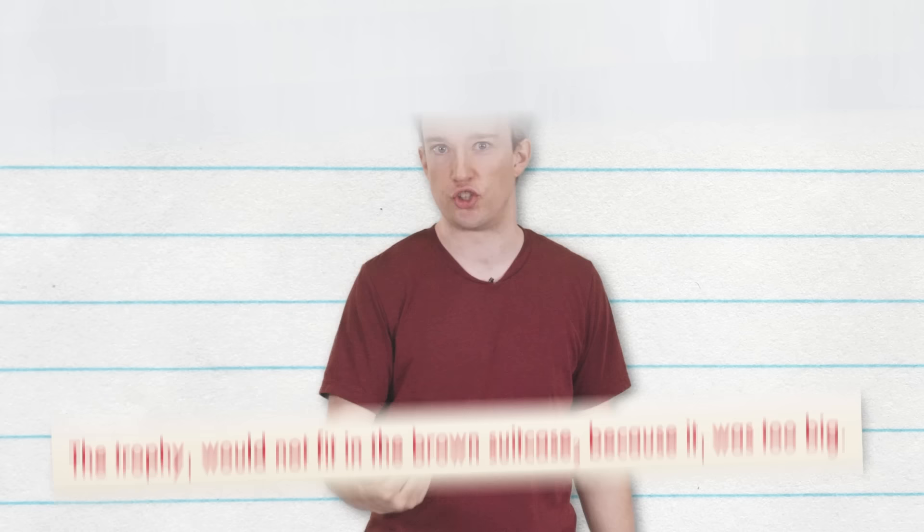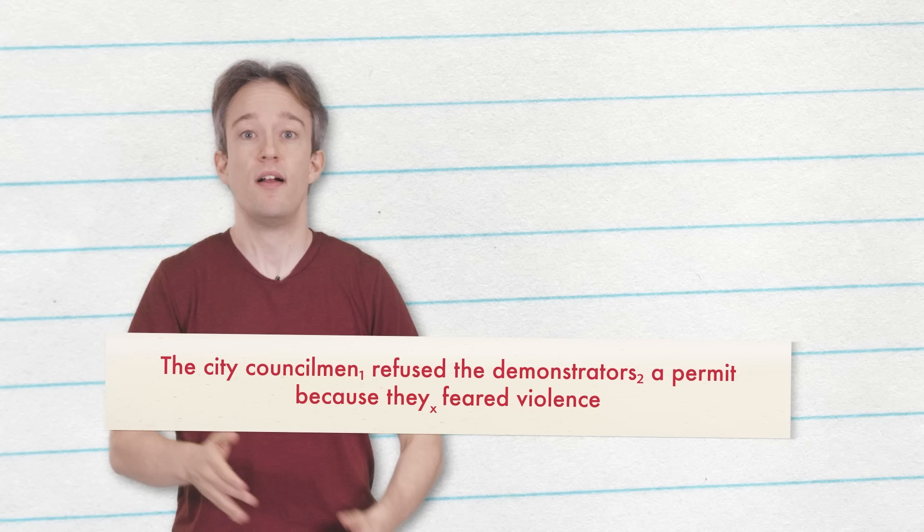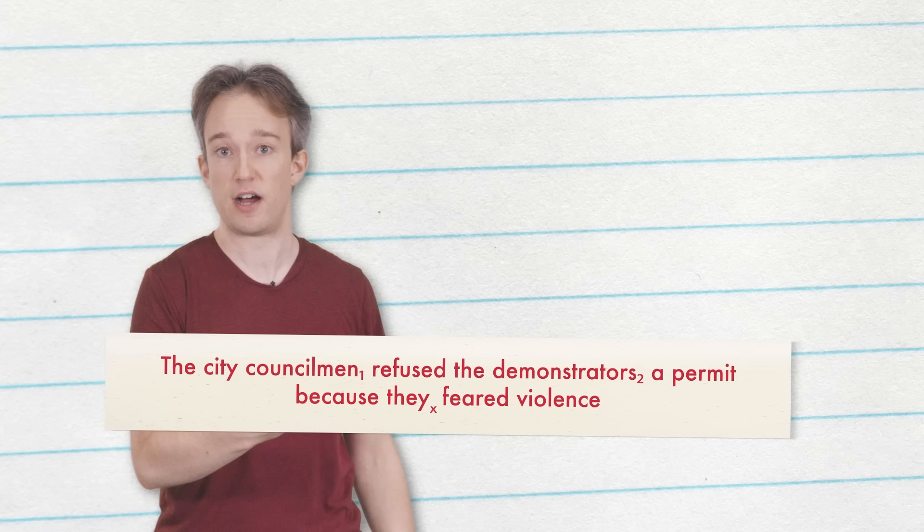Terry Winograd started this line of thinking in 1972 by proposing sentences that required that sort of context: "The city councilmen refused the demonstrators a permit because they feared violence" — or "because they advocated revolution."